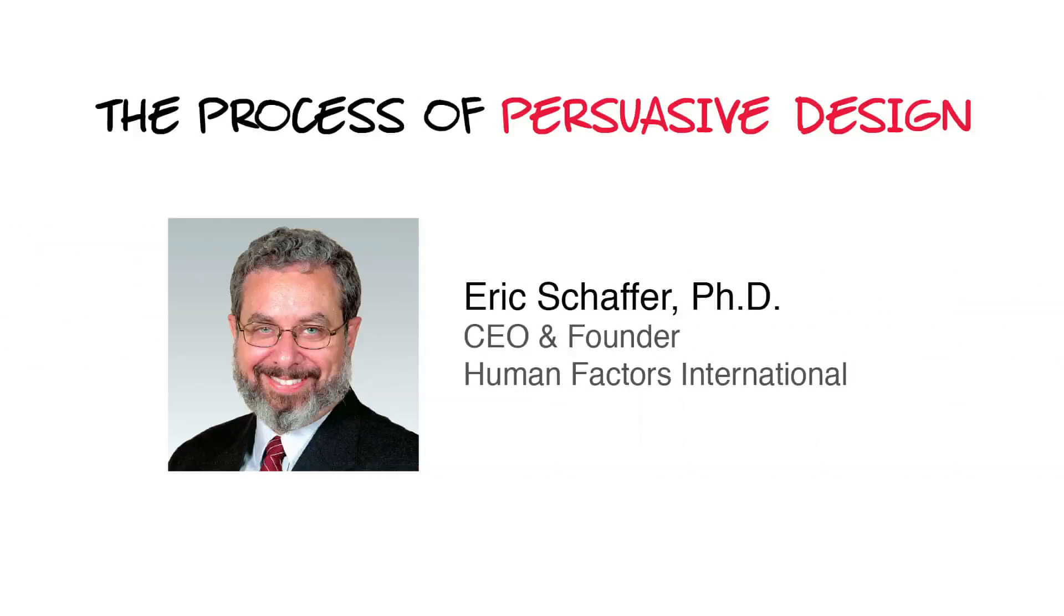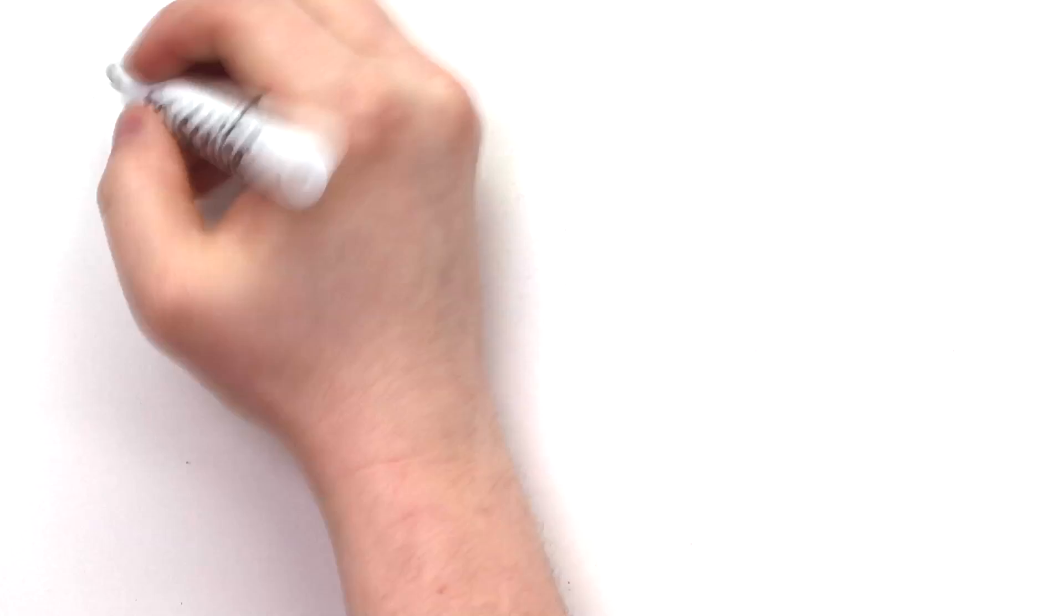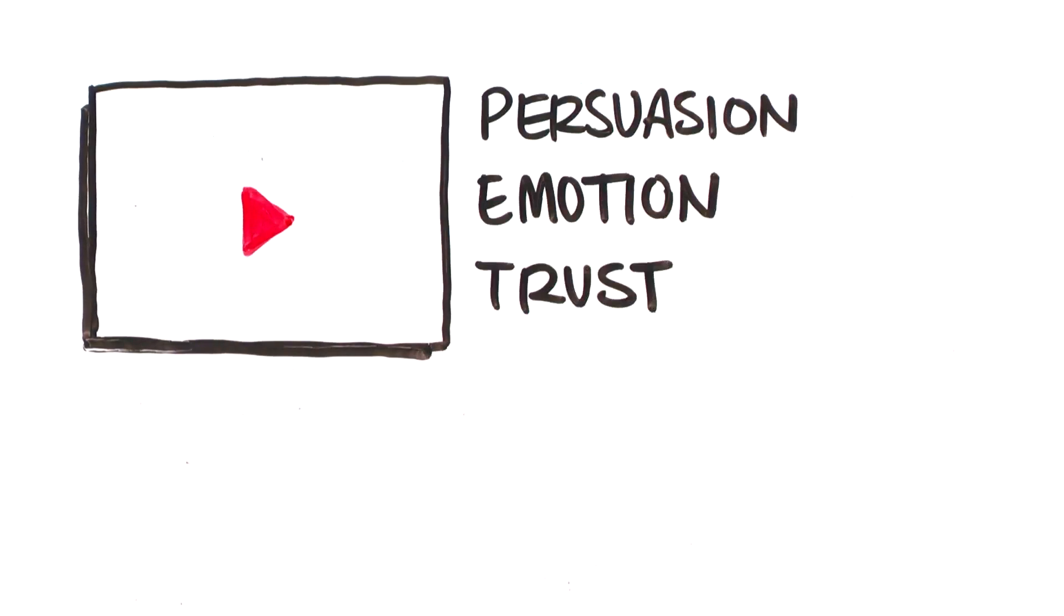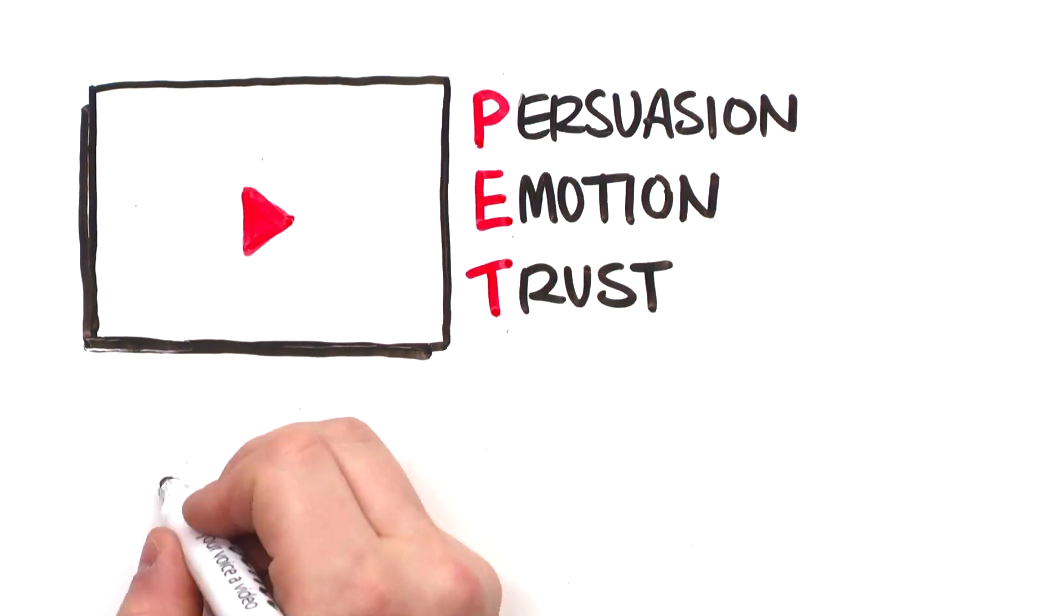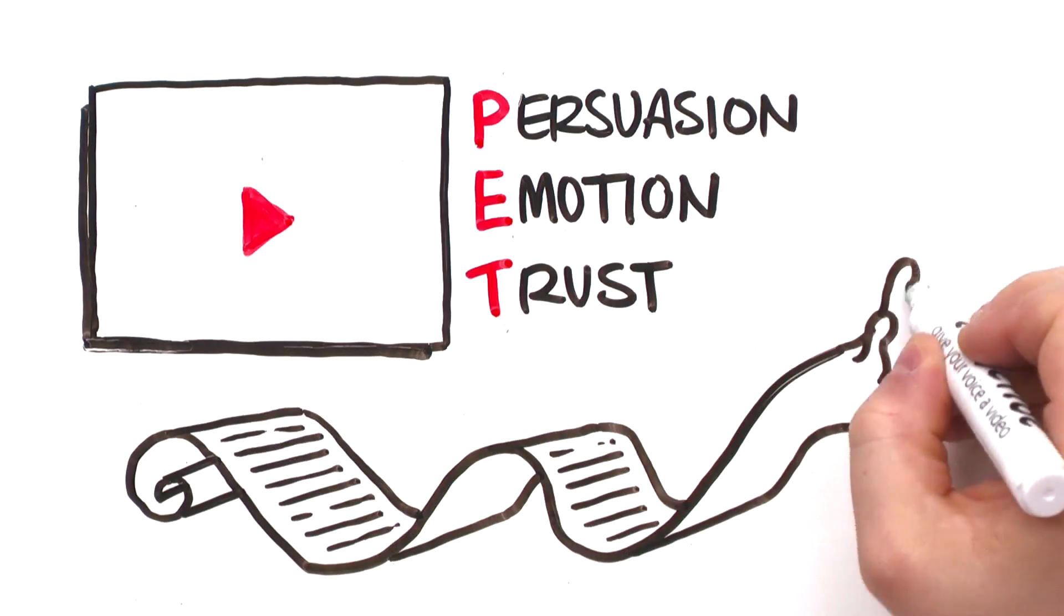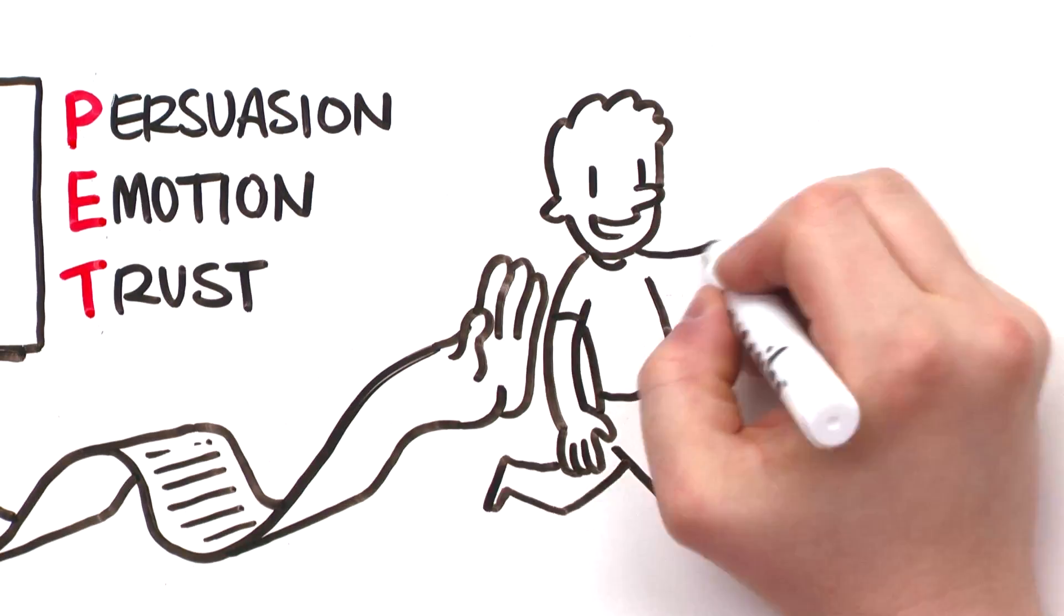The process of persuasive design: six steps in six weeks. If you've seen our previous video on persuasion, emotion, and trust—we call it PET—you know that there's a long list of methods we can use to motivate customers.